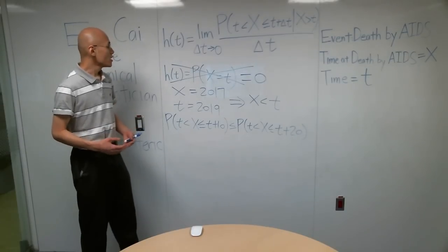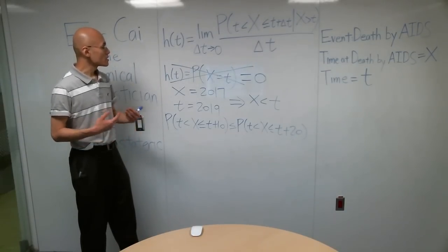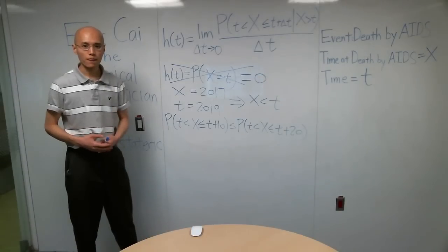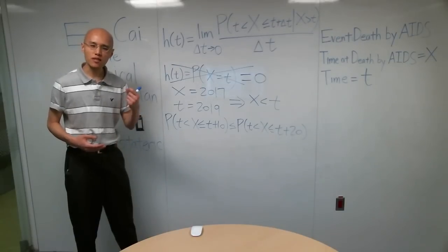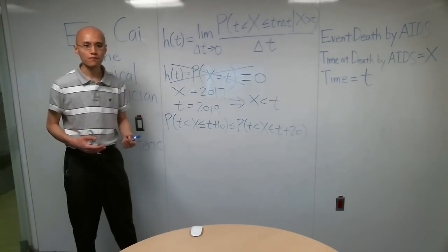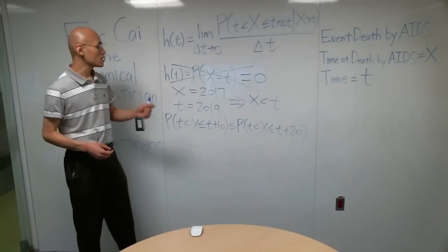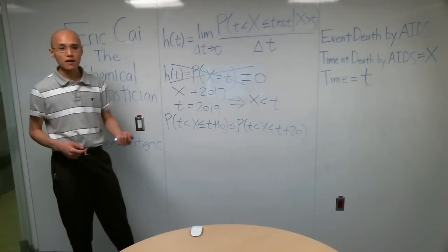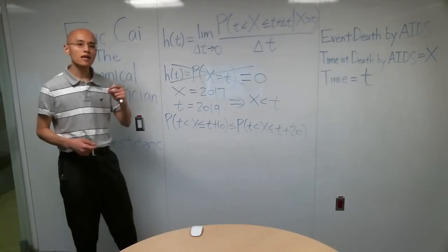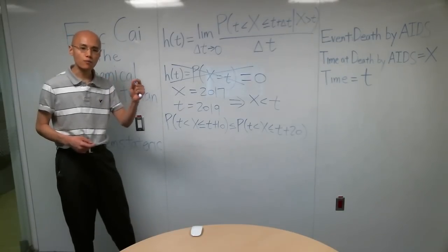And finally, you may be wondering why we're taking the limit as delta T goes to zero. Well, remember we're trying to measure the risk of an event happening at a particular point in time. So when we take the limit as delta T goes to zero, we're going to get that probability happening in some particular infinitesimally small period of time.